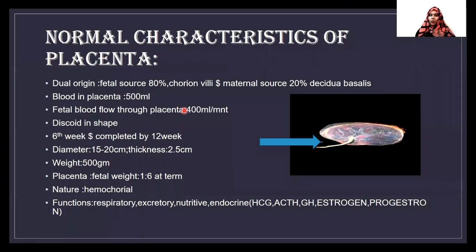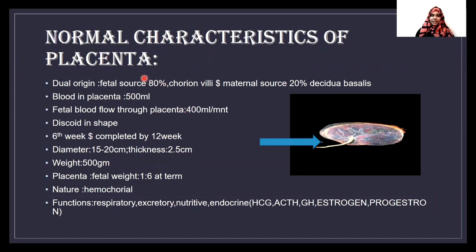What do you mean by placenta? Placenta is an organ that is developed during the period of pregnancy inside the uterus, which helps the uterus as well as the mother, and mainly helps the fetus in their growing process. We will see what are the normal characteristics of placenta — these are most commonly asked questions in nursing exams.